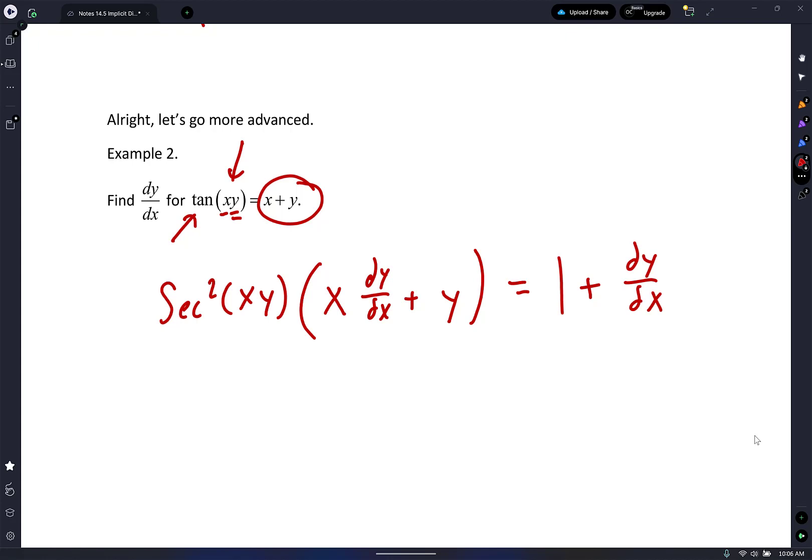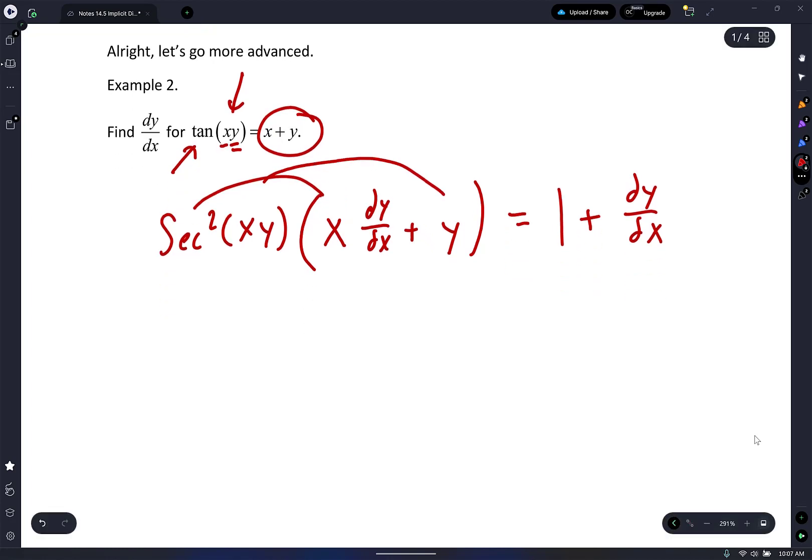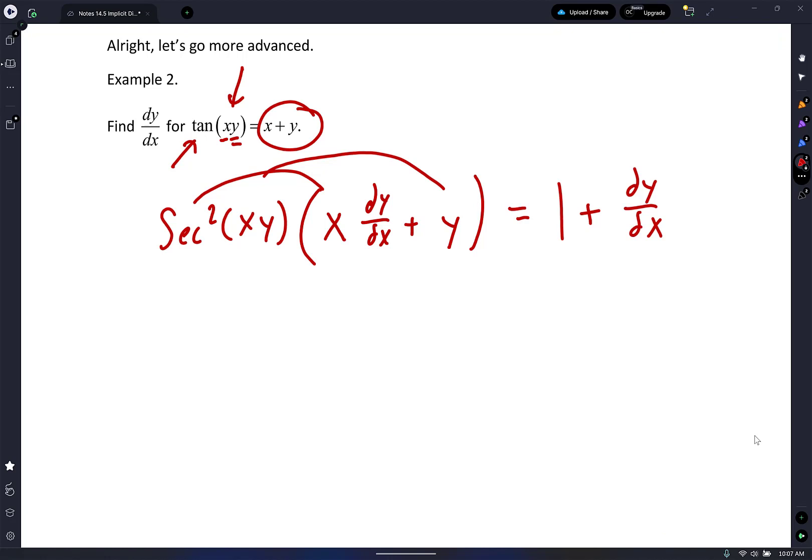The calculus was the easy part. Everything else now just turns to algebra. Distribute the secant squared. I'm going to write x secant² xy, put the dy/dx in the back here, plus y secant² xy equals 1 plus dy/dx.